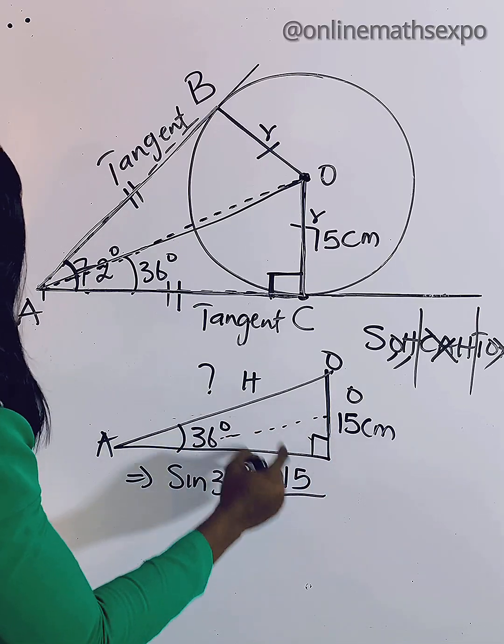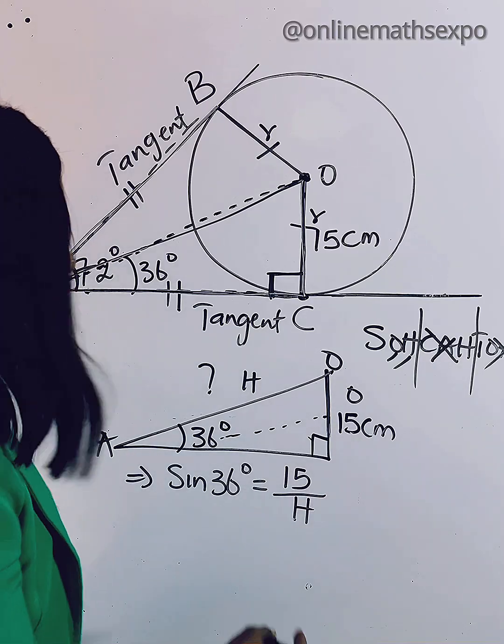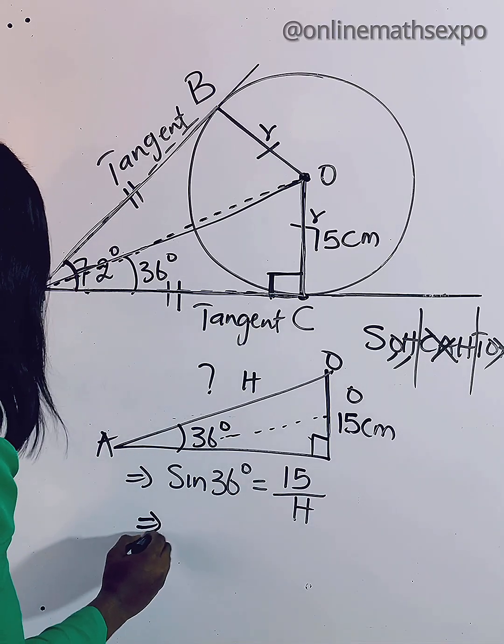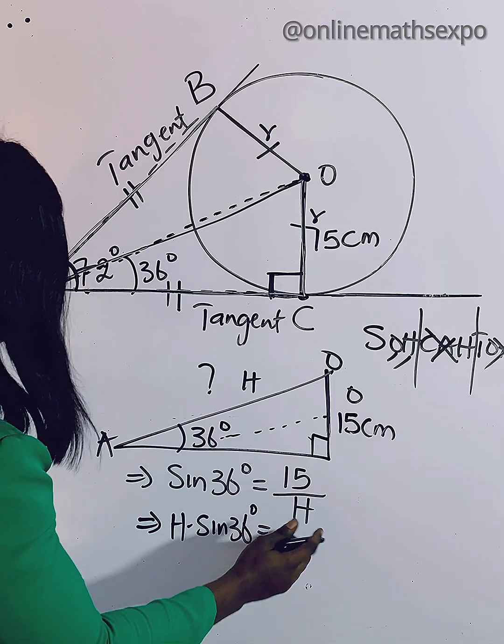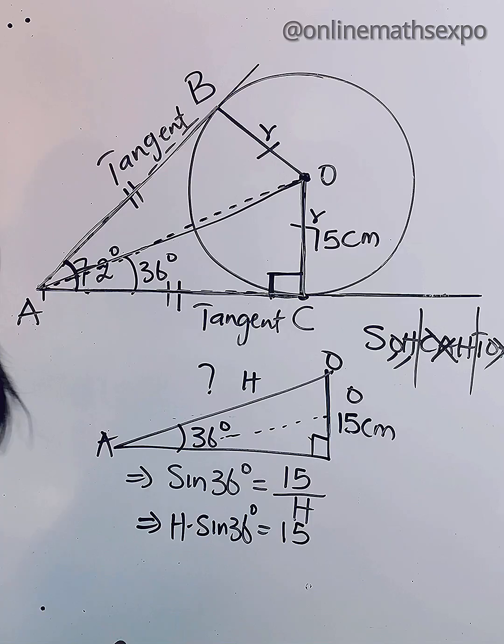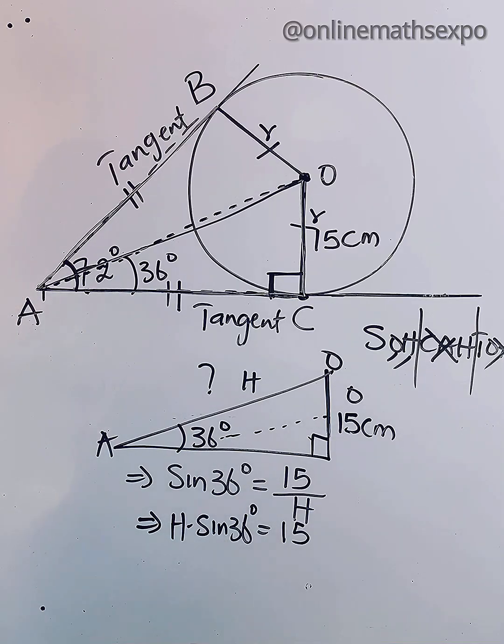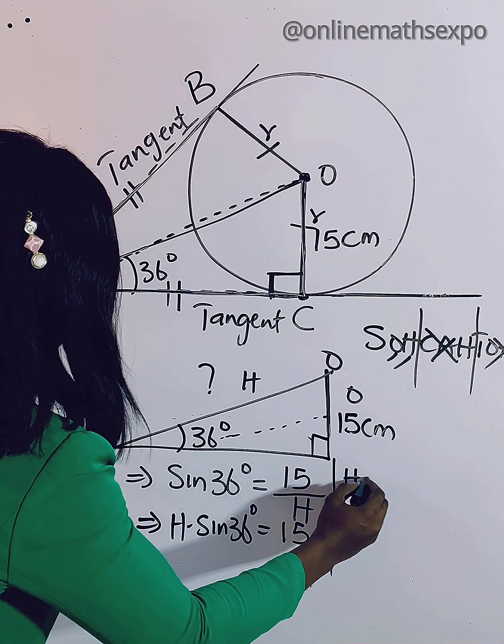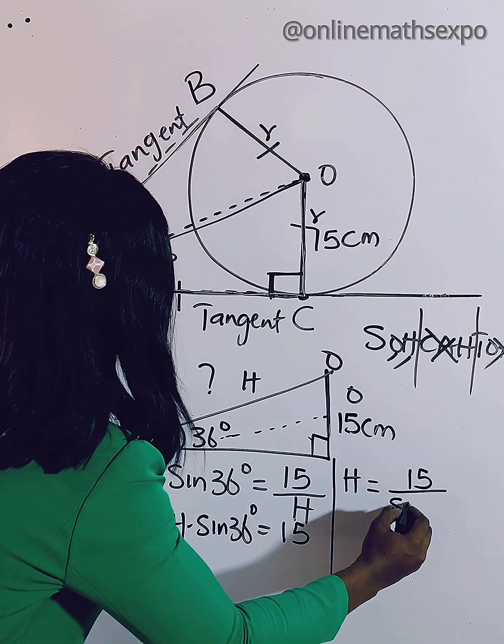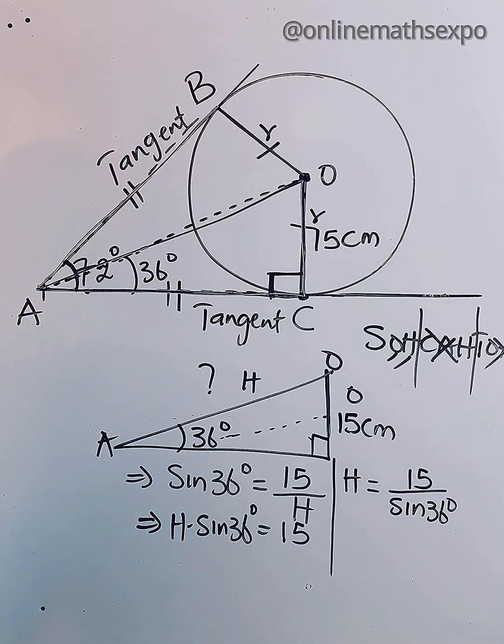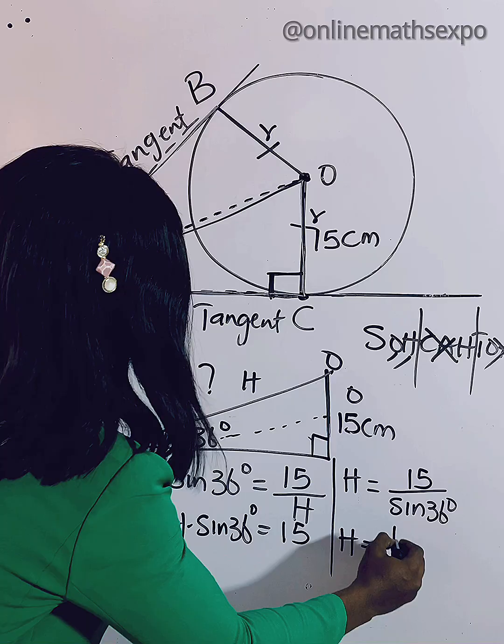From here to get H, we multiply both sides by H, so we have H multiplied by sine 36. If you multiply this it gives you 15. So what do you do to get H? You divide both sides by sine 36. So we now have H equals 15 divided by sine 36 degrees.